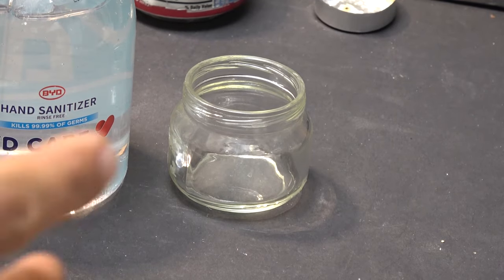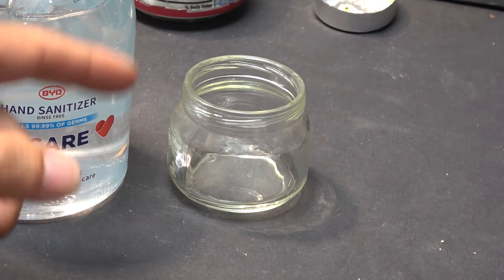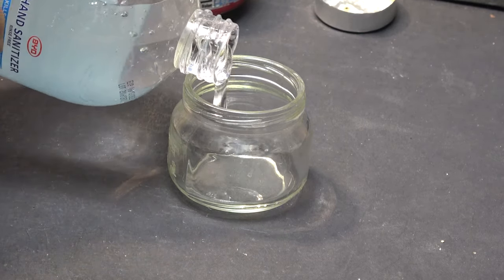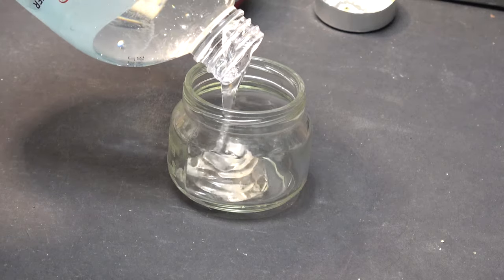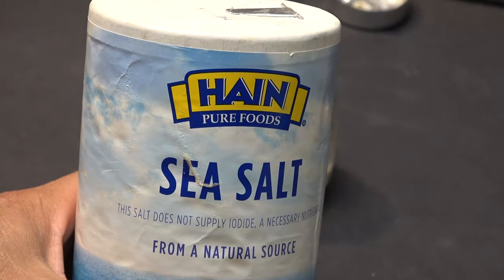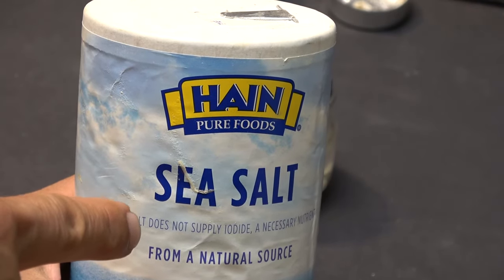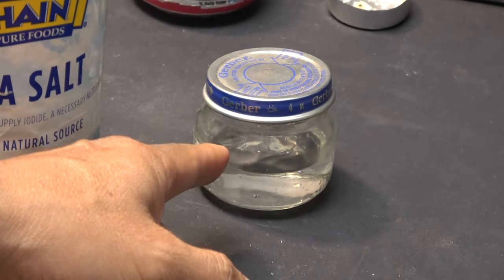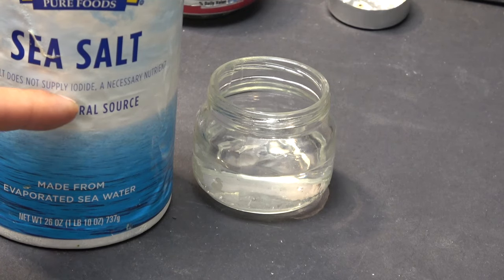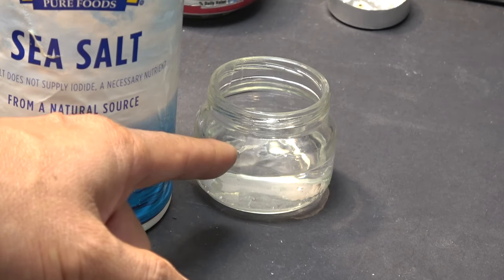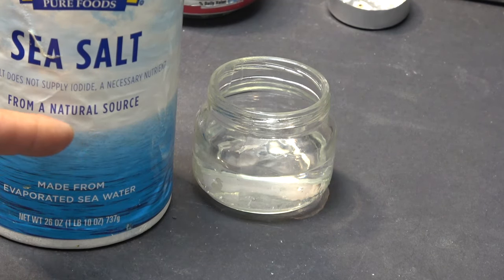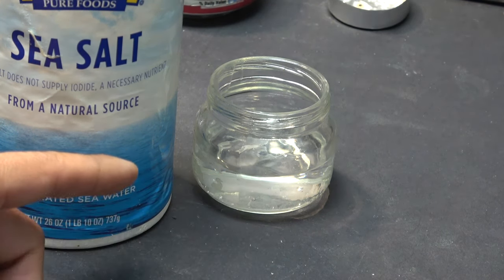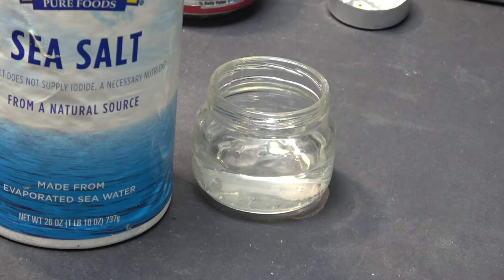Next, let me show you how to separate the alcohol from the hand sanitizer. I'm gonna pour some hand sanitizer in here, and I'm gonna use table salt, sodium chloride, and mix it with the hand sanitizer. You don't need much salt, about 10%. So I have about 50 ml of hand sanitizer, so I need only 5 grams of salt.